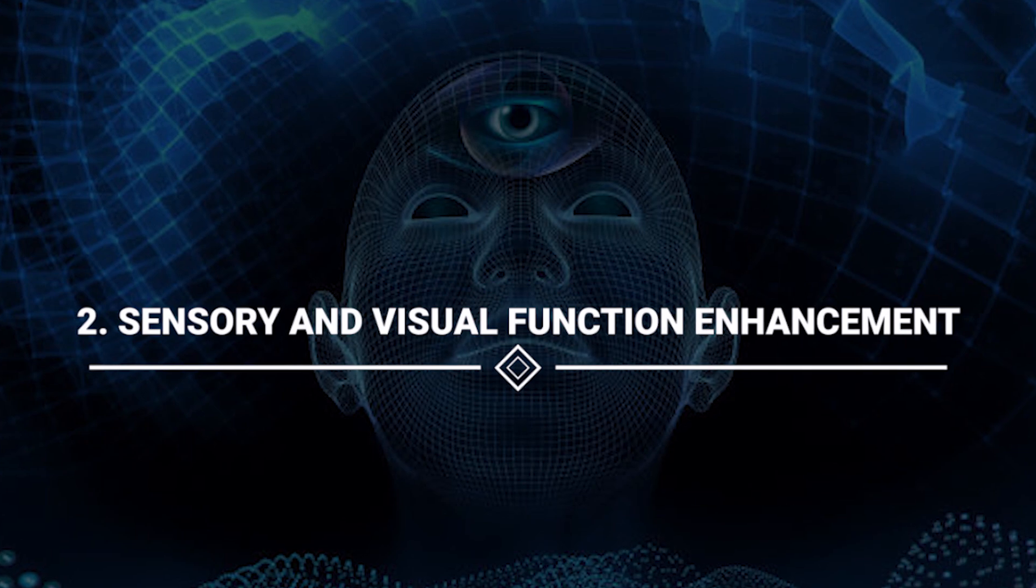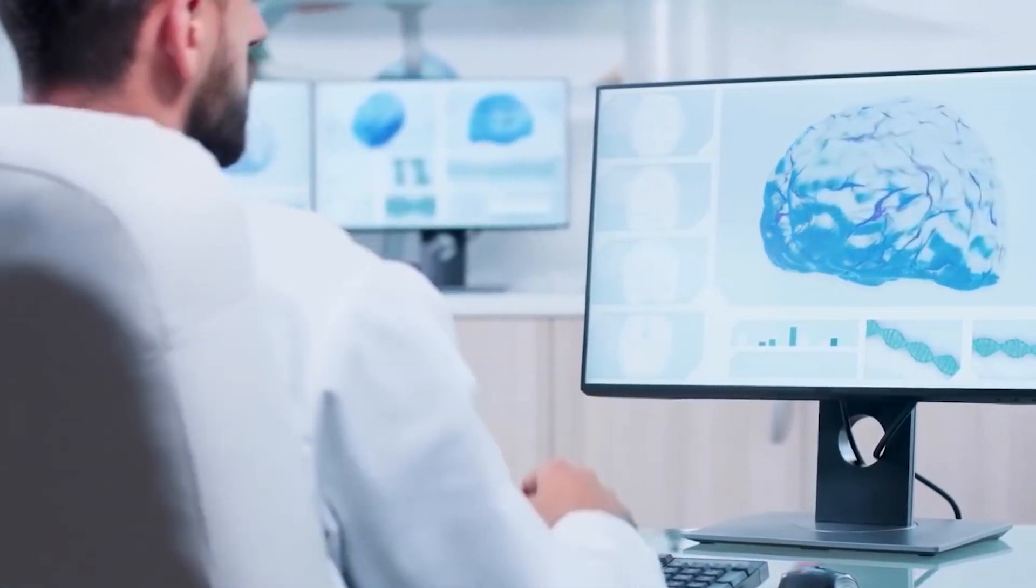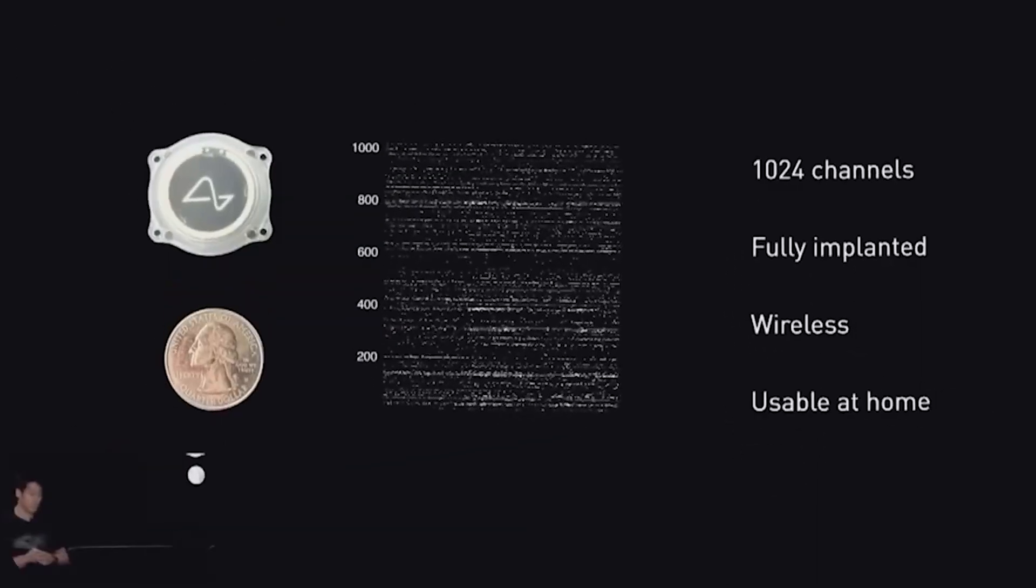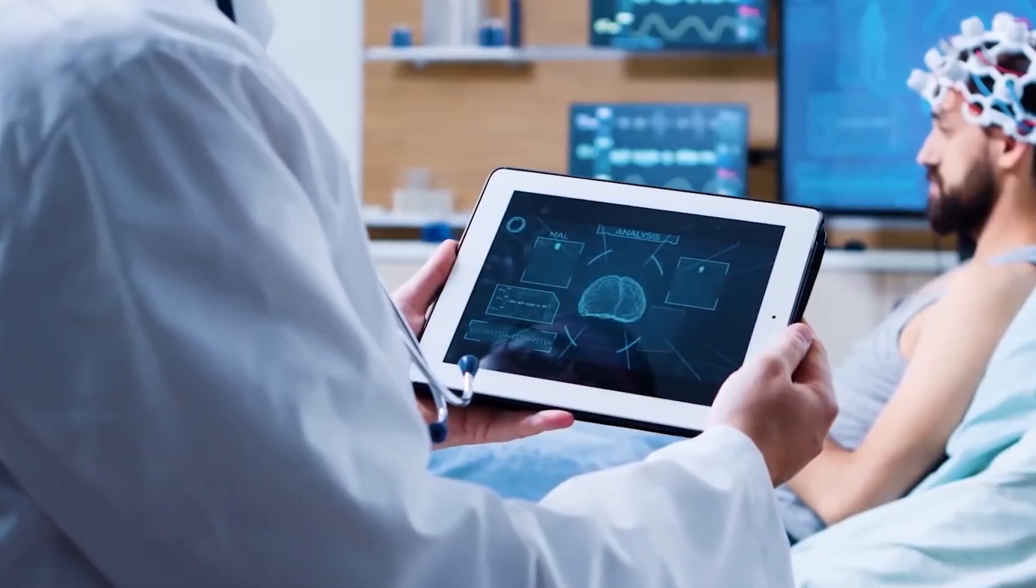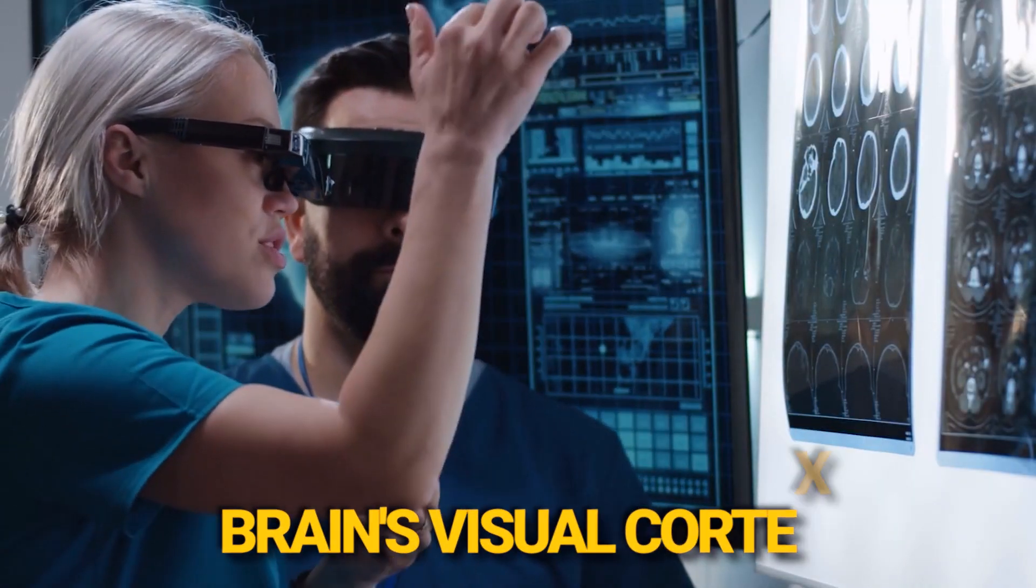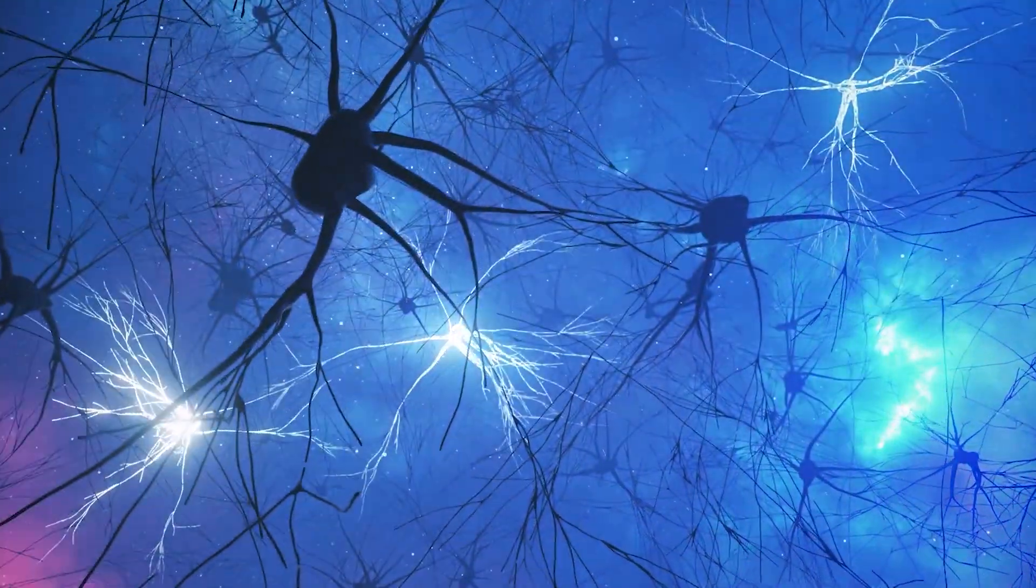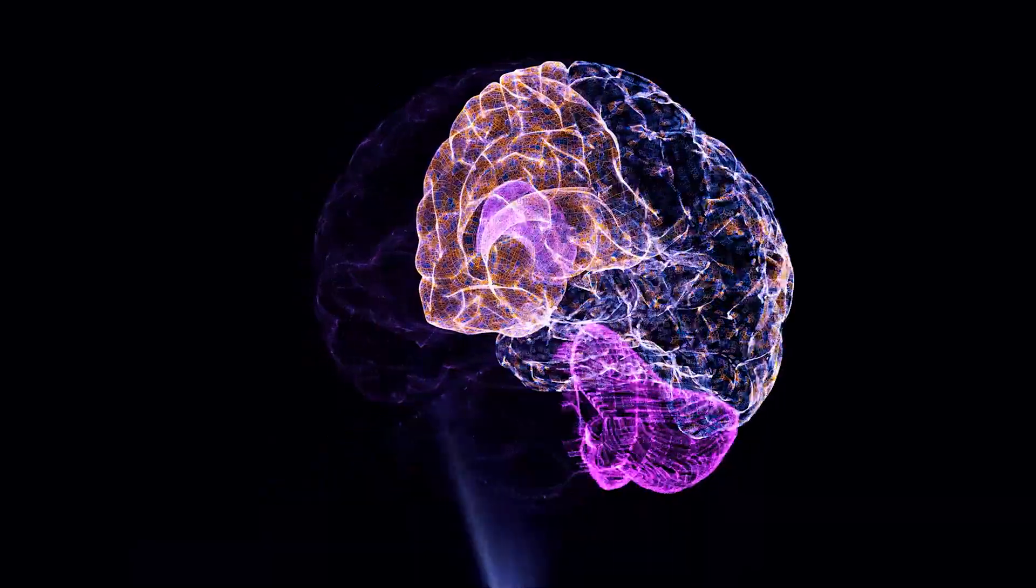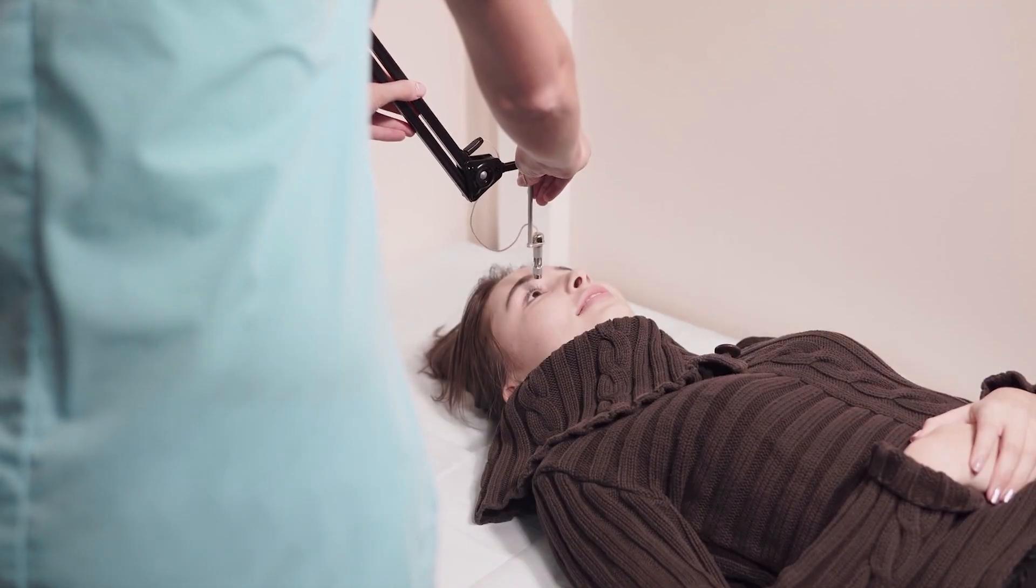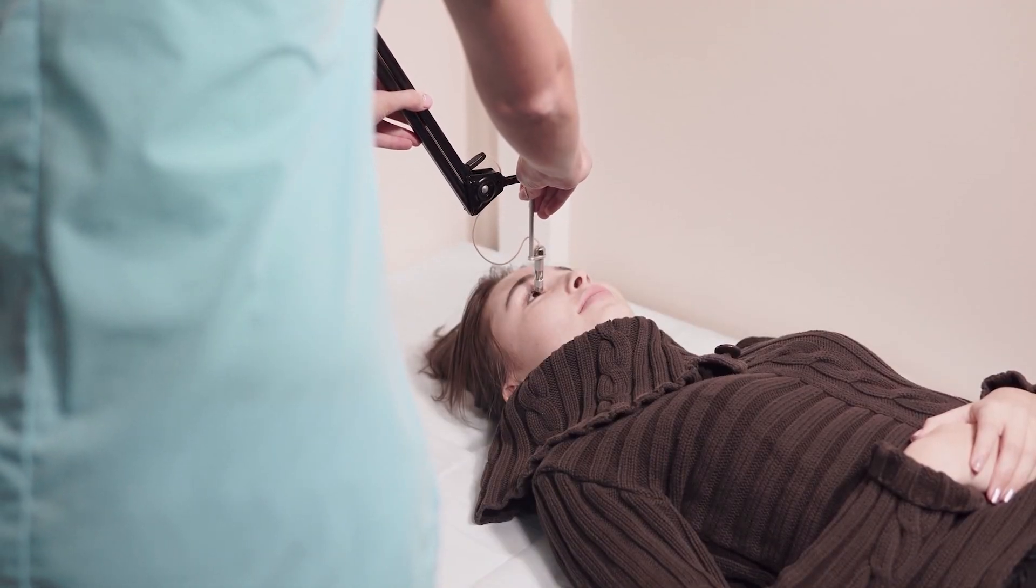2. Sensory and Visual Function Enhancement. Neuralink's ambitions extend beyond mobility. For those with visual impairments or retinal injuries, the prospect of seeing again is within reach. Neuralink aims to create a visual prosthesis by directly connecting a camera to the brain's visual cortex. By employing thousands of tiny electrodes, they can stimulate the brain to recreate visual images, effectively allowing individuals to see through their minds. It's akin to watching a movie in your thoughts, offering the gift of sight to those who have long lived in darkness.